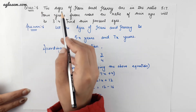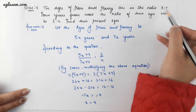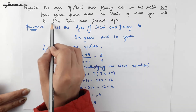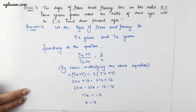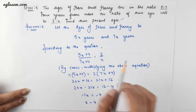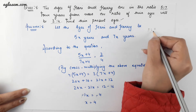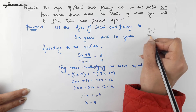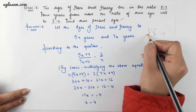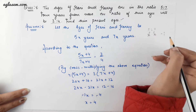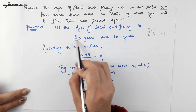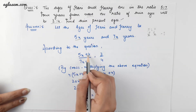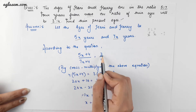Coming to question number 6: the ages of Harry and Harry are in the ratio 5 ratio 7. Four years from now, the ratio of their ages will be 3 ratio 4. Find their present ages. We know that whenever a ratio like 5:7 is given, it must have come by dividing by some common number. Therefore we let the ages be 5x and 7x, and according to the question, 4 years from now that is (5x plus 4) and (7x plus 4), the ratio would be 3 ratio 4.